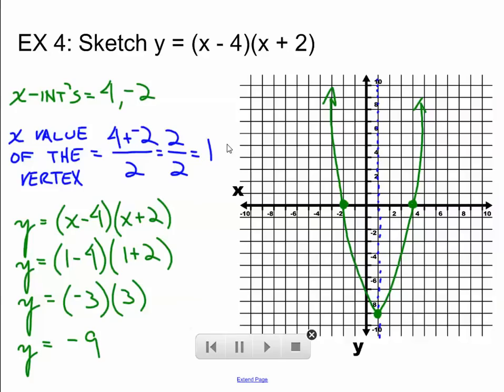In summary, find the x-intercepts. Plot them. Find halfway between the intercepts. That's the x value of your vertex. Use that x value of the vertex to find the y value of your vertex.